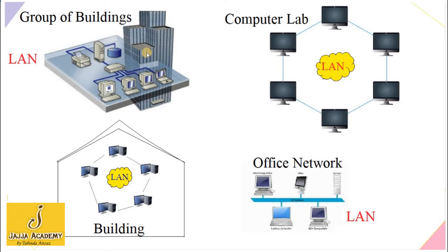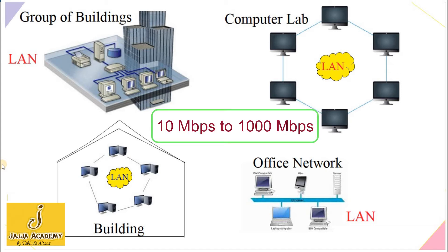It may be a computer lab; the network made in a computer lab is also known as a Local Area Network. Similarly, if we connect a group of buildings, the network made in a group of buildings is also known as a Local Area Network. Different resources and computers are connected together, making a LAN. The data sharing speed in a local area network is very high, ranging from 10 Mbps to 1000 Mbps, which is more than the speed provided by telephone lines.